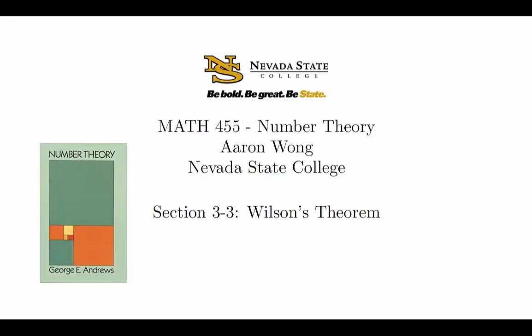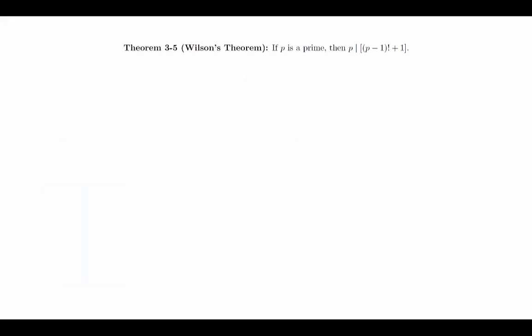Wilson's theorem is a basic result of number theory that has a surprisingly large number of applications. The proof of this one will also be combinatorial, so we're going to have another set of pictures to look at and think through. Just as with Fermat's little theorem, we'll think through a specific example and then work through a general proof in class. Theorem: If p is prime, then p divides p minus 1 factorial plus 1. We can explicitly calculate the result for p equals 2 to verify that it works, so we will assume that p is an odd prime. Specifically, we will look at the case where p equals 5.